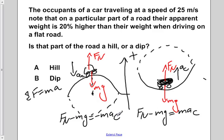Now if we add mg to both sides in each of these equations, we would have the normal force equals mg minus ma centripetal. And in the second one, we would have FN equals mg plus ma centripetal.